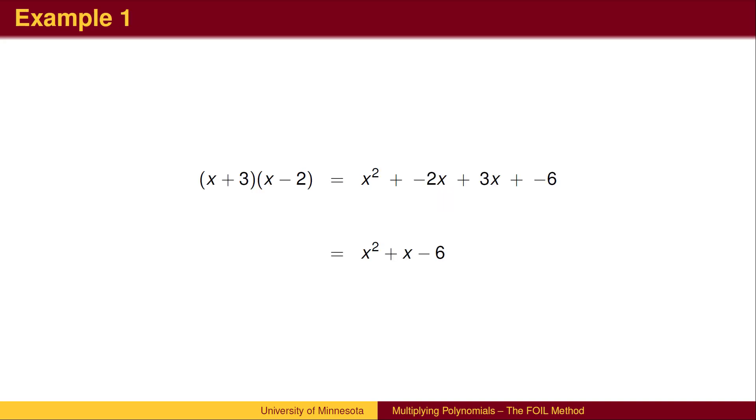When two binomials are multiplied, each of the terms in the first binomial is distributed over the second binomial. We multiply the x by both x and negative 2. Likewise, we multiply the 3 by both x and negative 2.